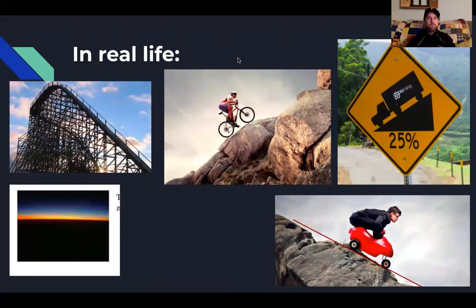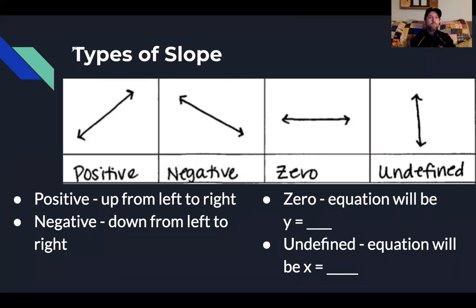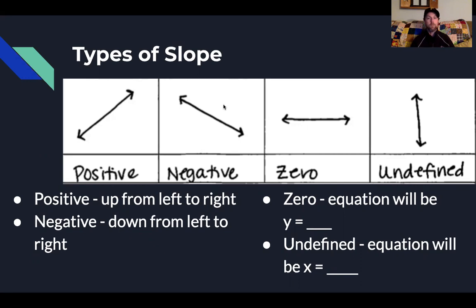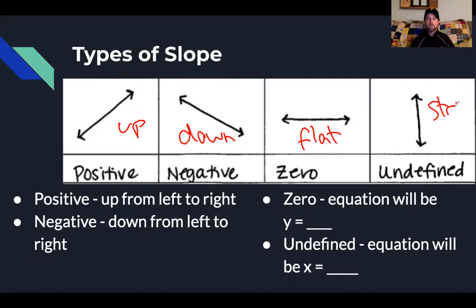Here are the drawings right from our notebooks — I know you all wrote this down. The four types of slope: positive slope, which is going up; negative, going down; zero; and undefined, which is straight up and down.